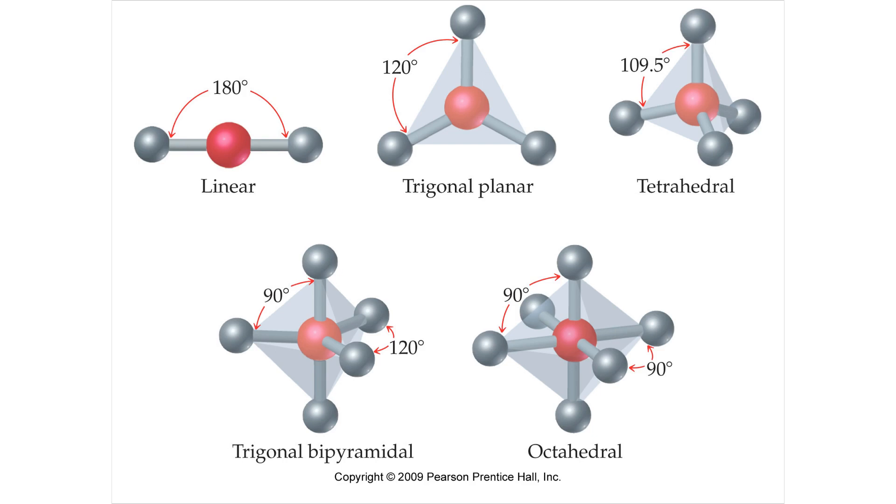You could have a trigonal planar, where all four of these atoms are in the same plane, with 120 degrees, since it makes a circle around the central atom. You could have what we looked at before, a tetrahedral, where you have 109.5, and there's four equilateral triangles.